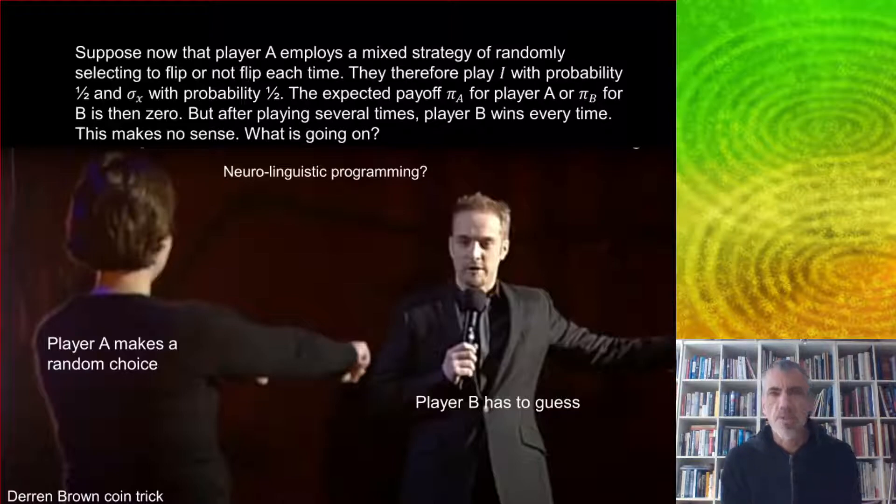But suppose now that player A employs a mixed strategy of randomly selecting to flip or not flip each time. They play the identity with probability of half and flip with probability of one half. Then the expected payoff for either player is going to be zero because it's a zero-sum game. But after playing several times, player B wins every time. This makes no sense. What is going on?